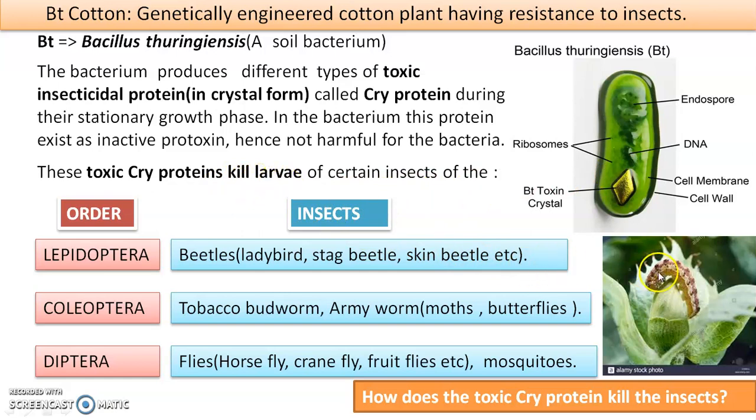Insects in these orders include beetles (Coleoptera), moths and butterflies (Lepidoptera) such as the tobacco budworm and army worm, and Diptera such as horse fly, crane fly, fruit fly, and mosquitoes. You can see the larvae — this is a boll of cotton. We are going to talk about how this toxic cry protein kills the insects.